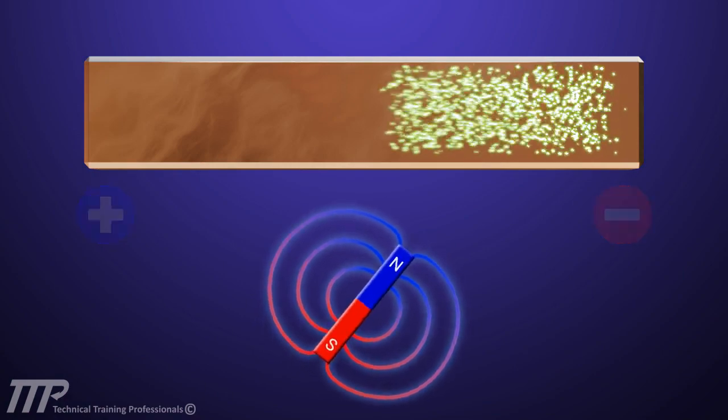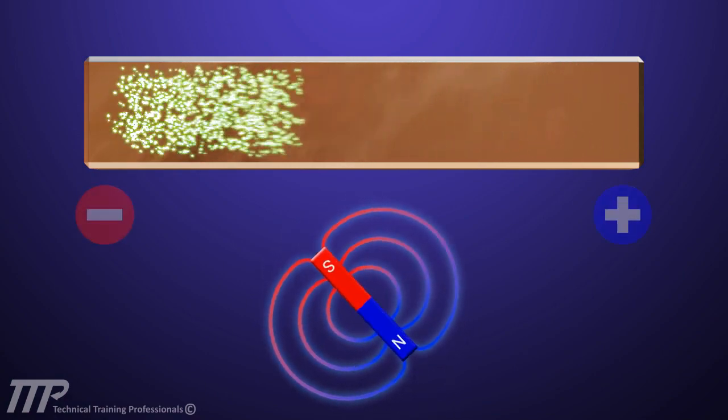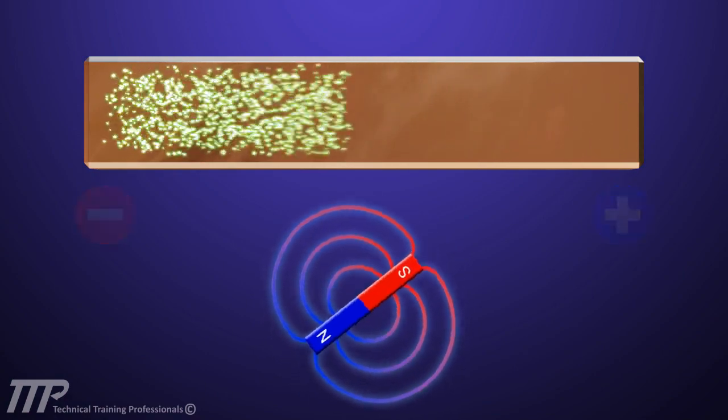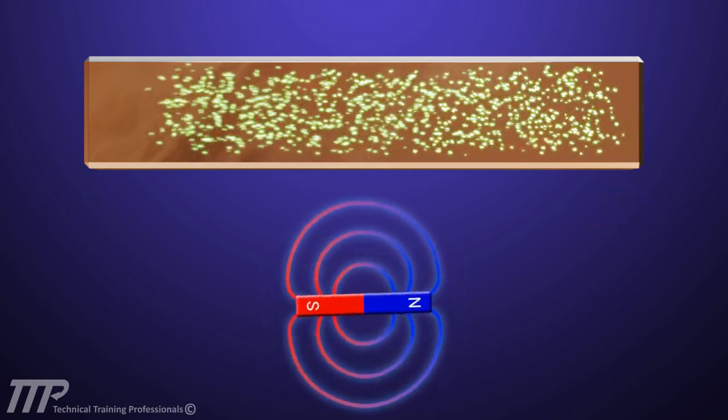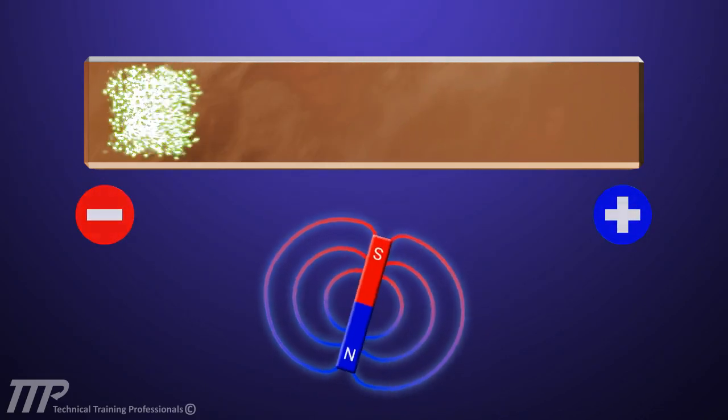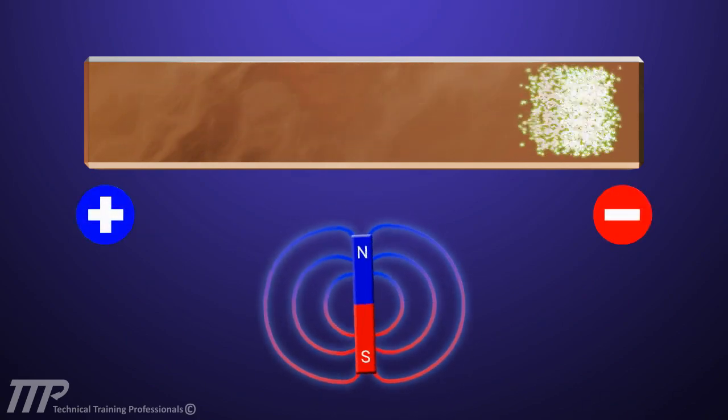As we learned previously, a magnetic field cutting through a conductor will cause the attraction of free electrons to one end. The number of electrons, or voltage induced, will be proportional to the strength of the magnetic field.